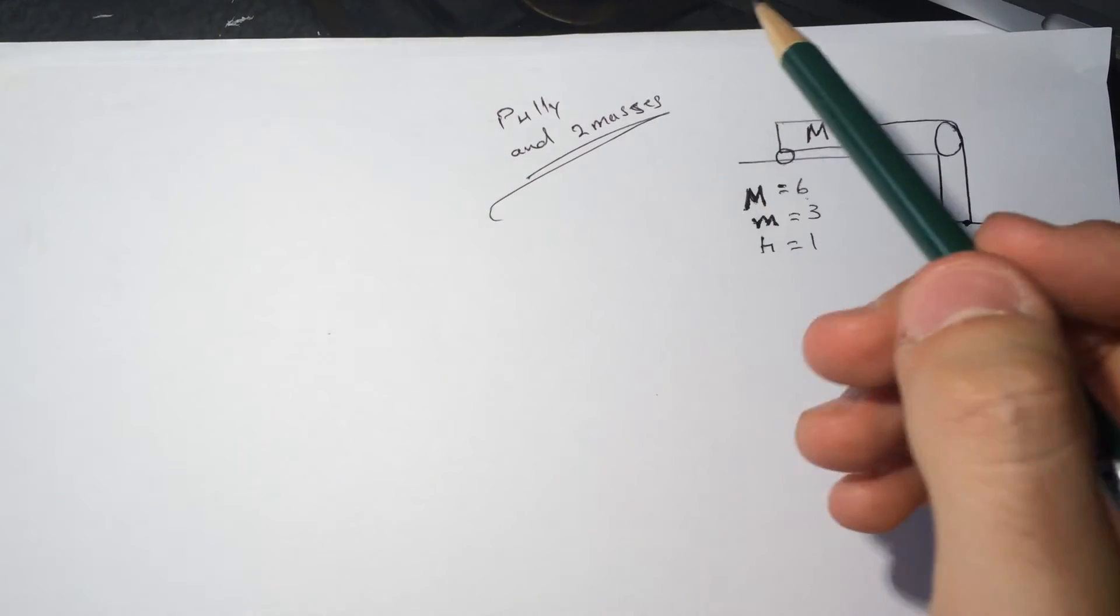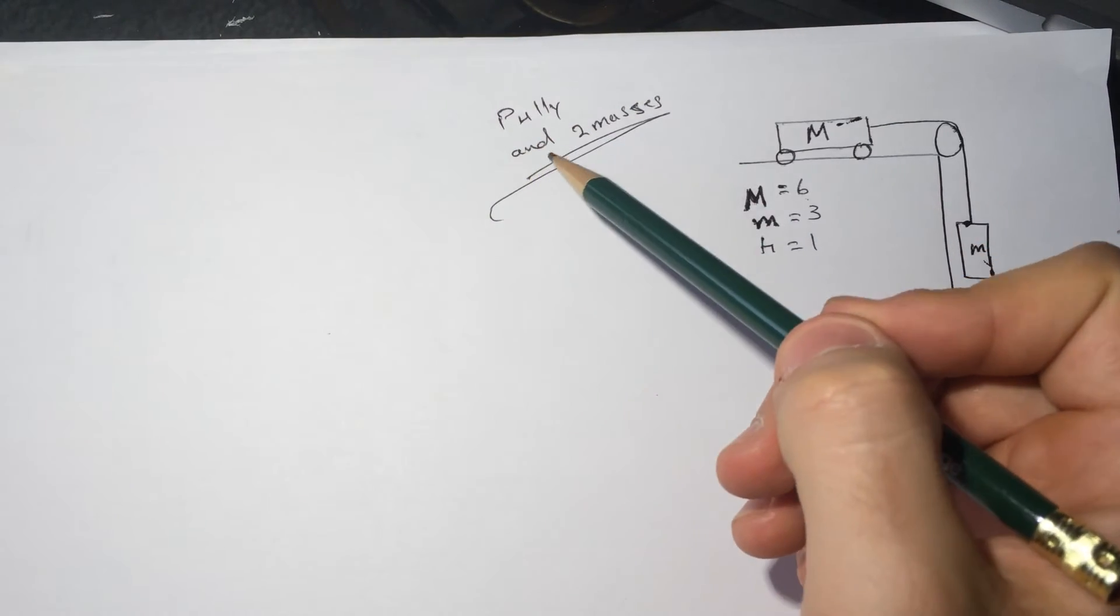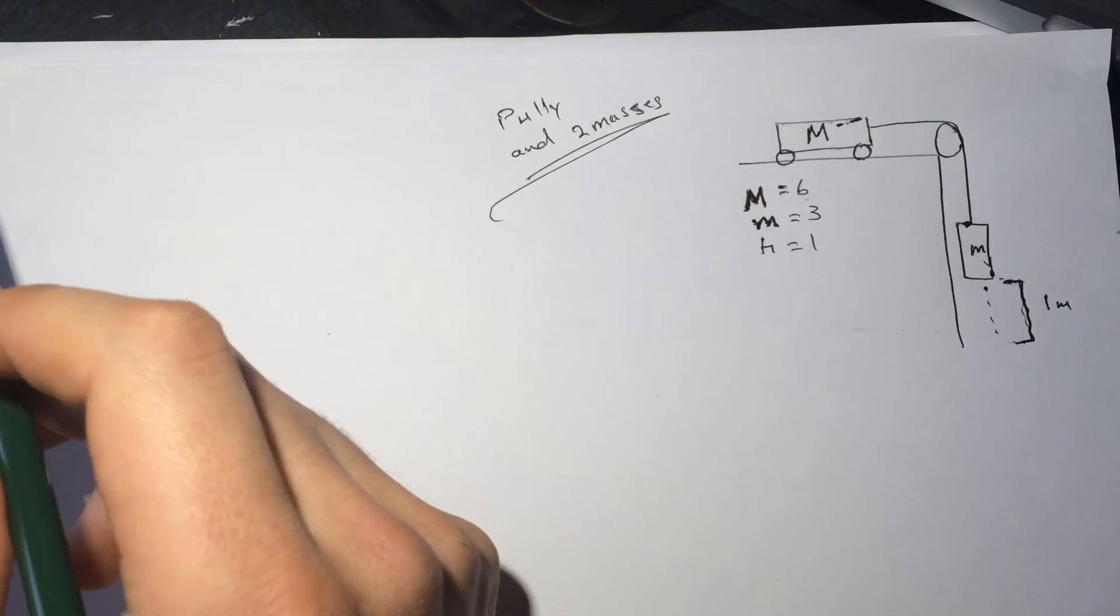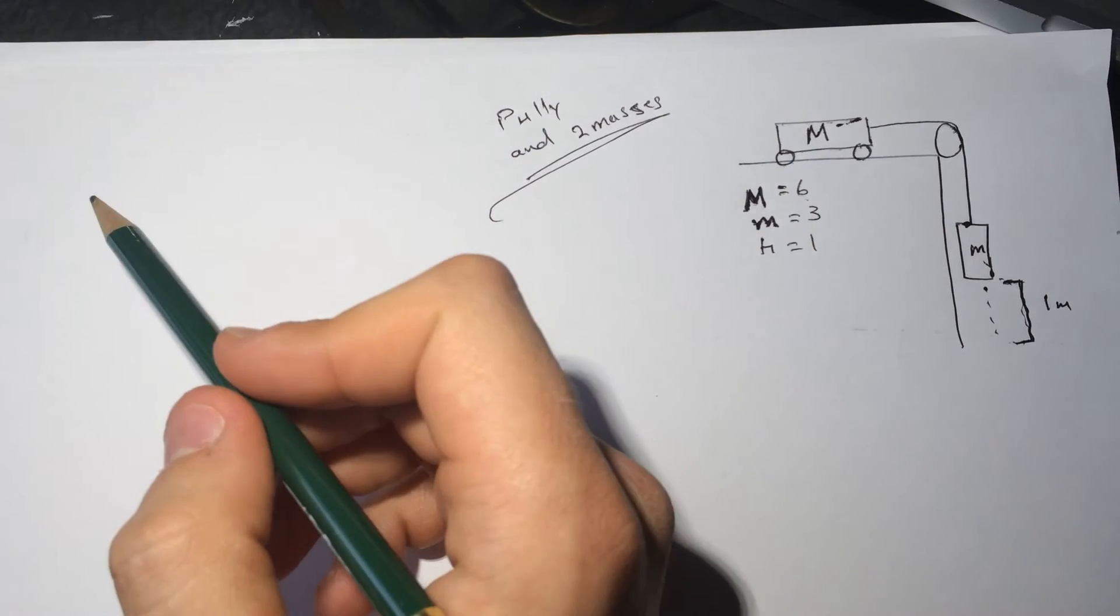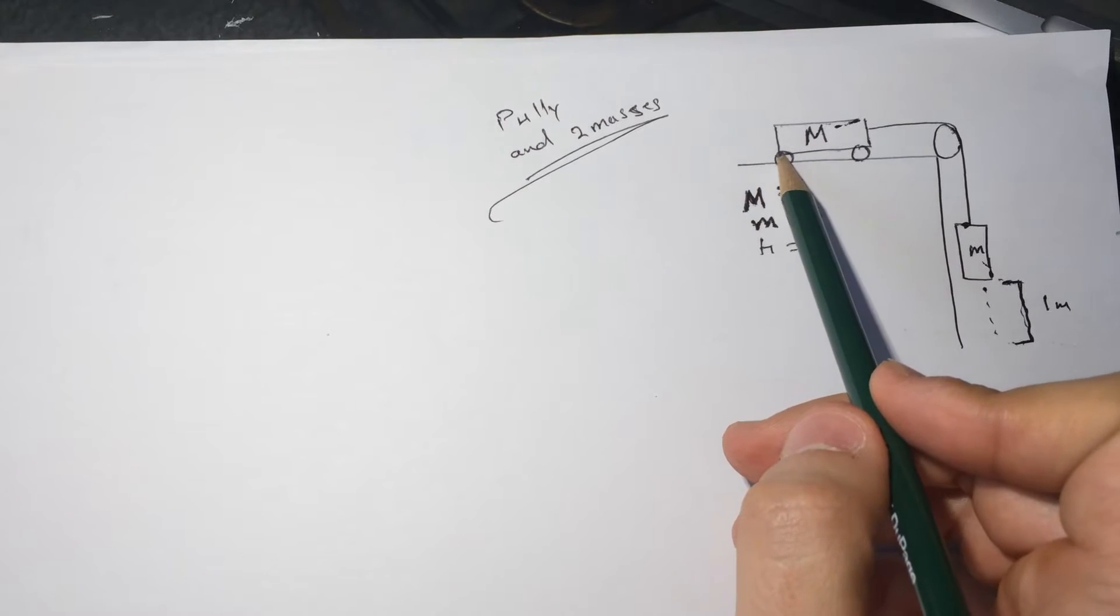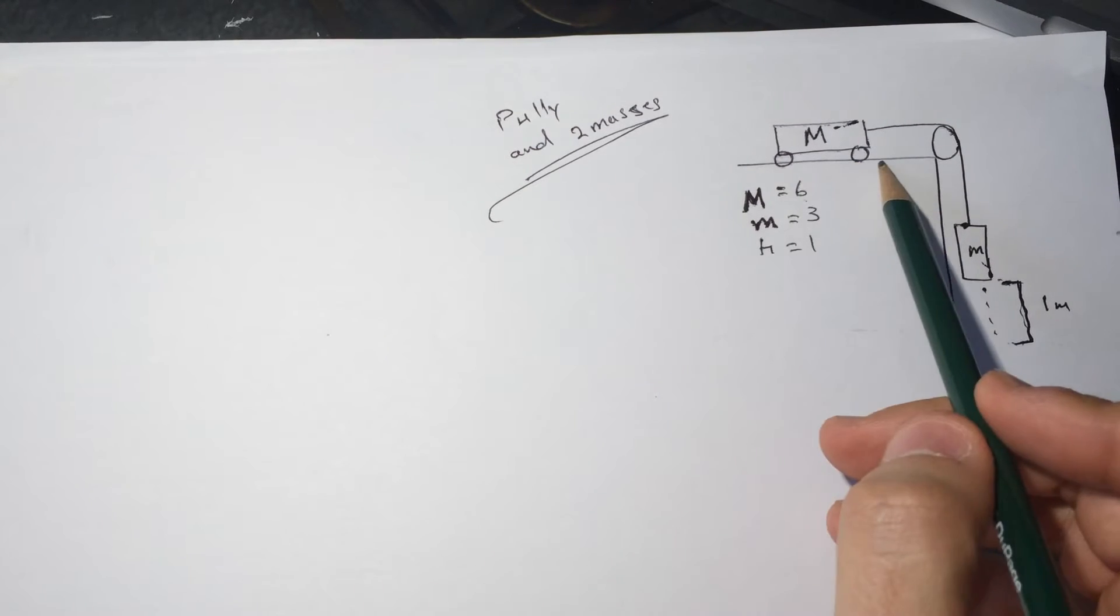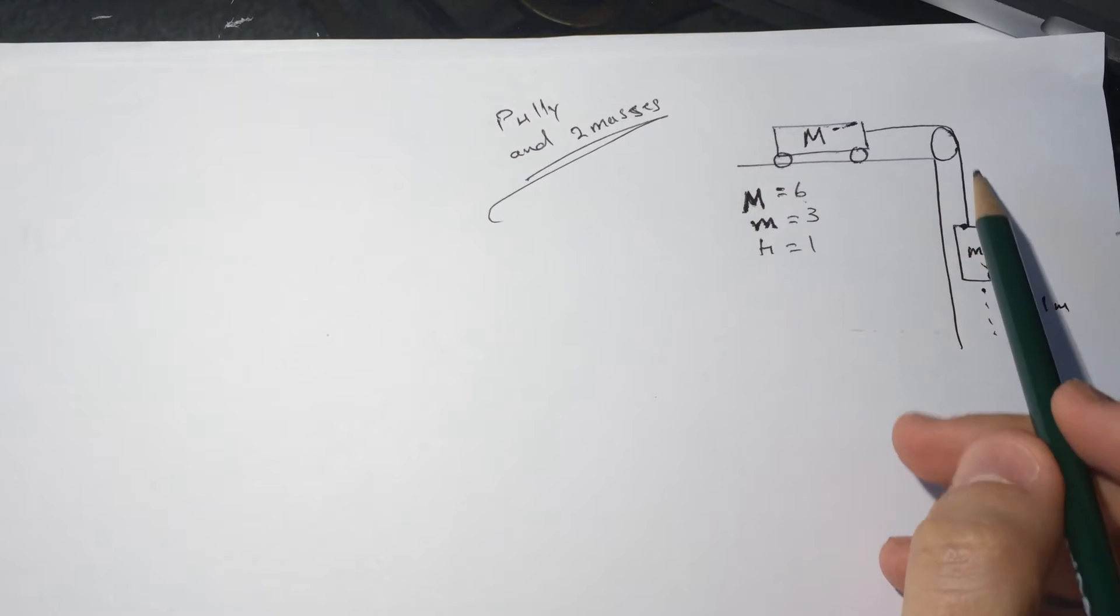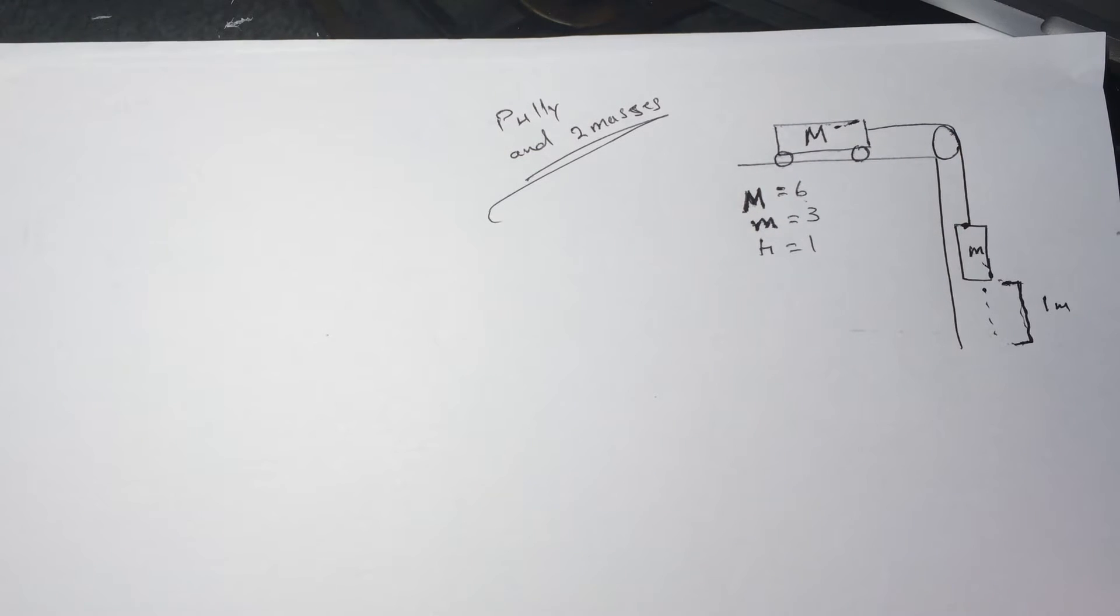Hi guys, this is a solution for the pulley and two masses smart physics problem. So here we have a mass on a cart that's frictionless, and we have a mass hanging down. There's a frictionless pulley too.